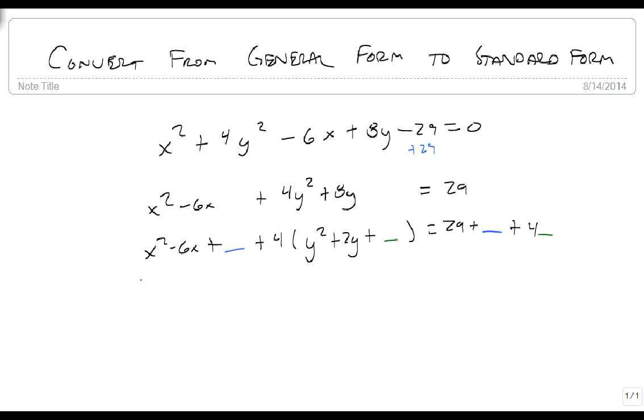Well we take minus 6 and we half it and that's minus 3, and minus 3 squared is 9. So I need 9 here and 9 here. Then we take half of 2 which is 1 and 1 squared is 1. So we put 1 here and 1 here.